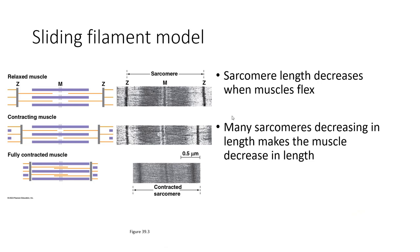Let's look at the sliding filament model more closely with some electron micrographs. The sarcomere length decreases when your muscles are flexing — you can see myosin grabbing the actin, and the contracted sarcomere is much shorter than the extended sarcomere. When many sarcomeres along the length of the fiber decrease at the same time, and when many fibers decrease in size within a muscle, the entire muscle decreases in length, which allows it to do work.